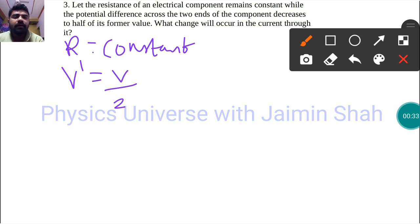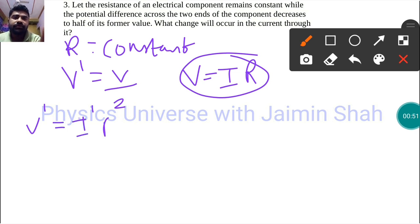So see, V is equal to IR. This is our first case when no changes happen in any of the components. Now new V dash is equal to I dash into R. So now to find I dash, because that is our new current.